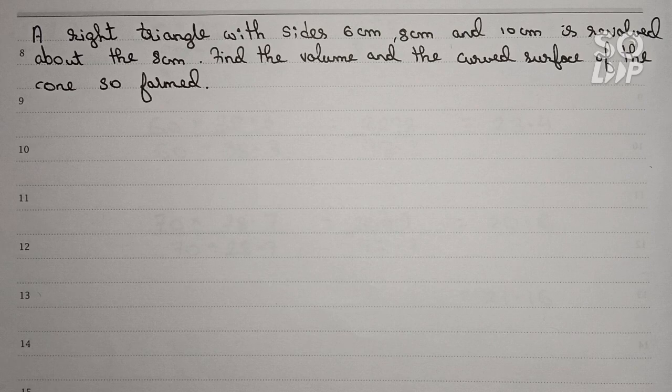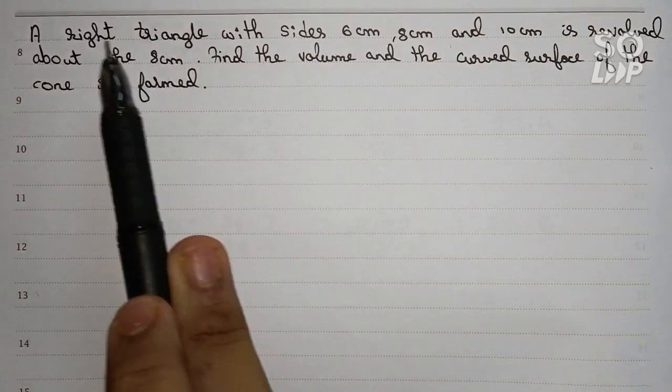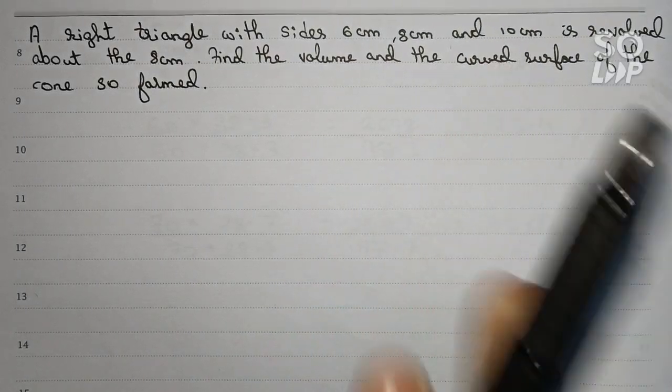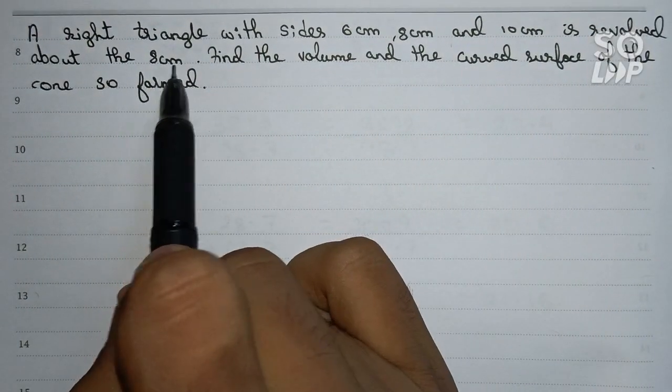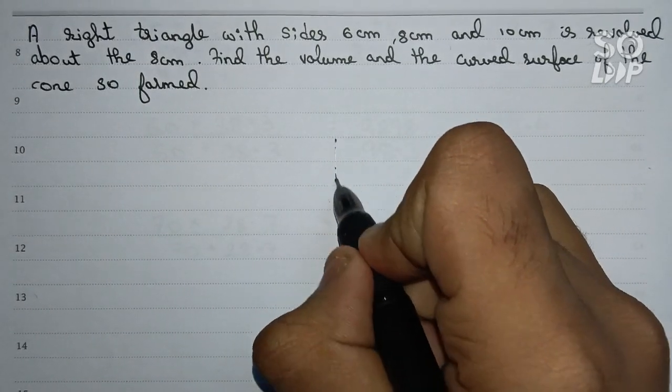So this is our question. In this question you are given a right triangle of 6 centimeter, 8 centimeter, and 10 centimeter. Now it's revolved around the 8 centimeter mark.